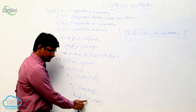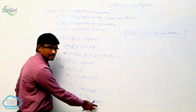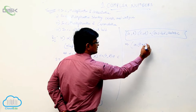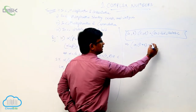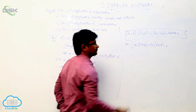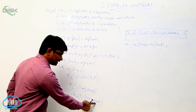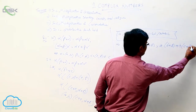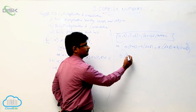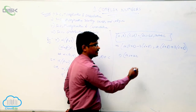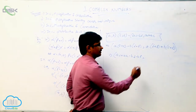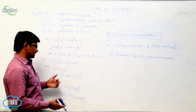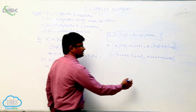Now multiply it out: (ac + ae − bd − bf, ad + af + bc + be). This is the value of alpha·(beta + gamma). Let this be equation 1.